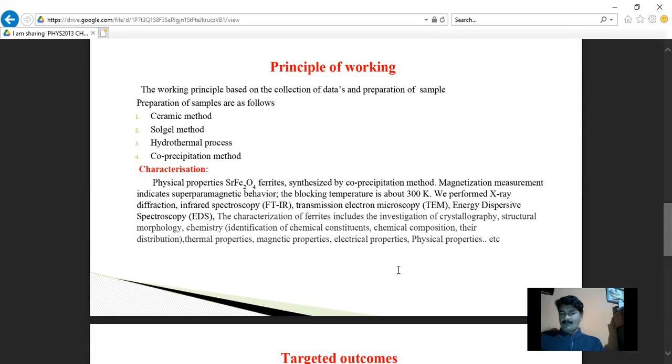The characterization of ferrite includes investigation of crystallography, structural morphology and chemistry, the identification of chemical constituents, chemical composition, their distribution, thermal properties, magnetic properties, electrical properties, and physical properties.